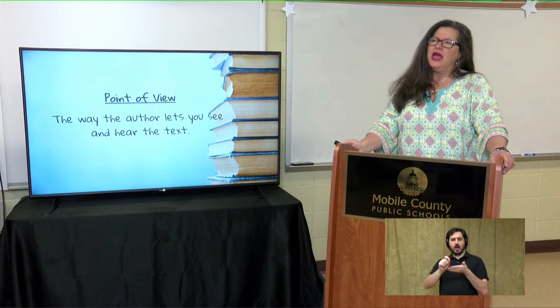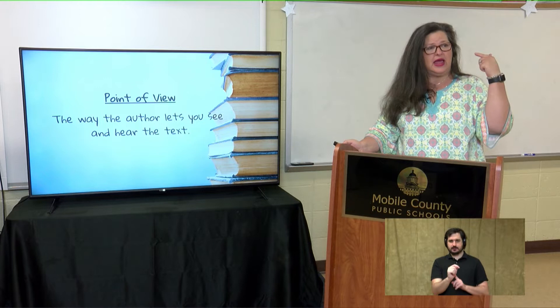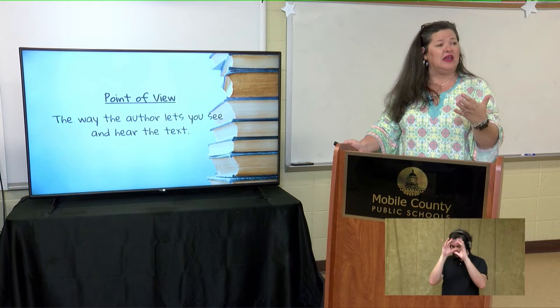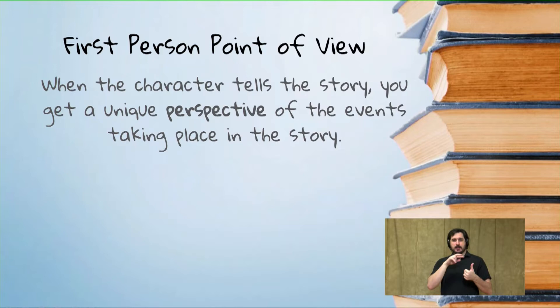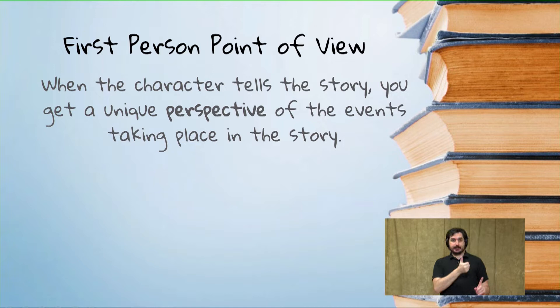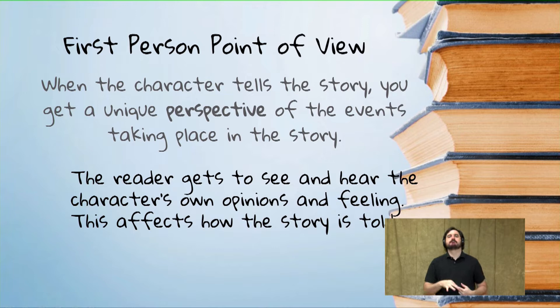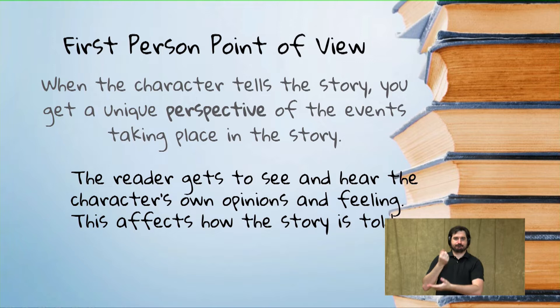Now, point of view means the way the author lets you see and hear the text. When you are reading, you need to be playing a movie in your head so that you are seeing what is being said. The first point of view is when the character tells the story — you get a unique perspective of events. The reader gets to see and hear that character's own opinion and feelings, and this tends to affect the way the story is told.